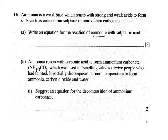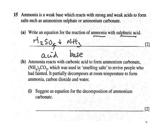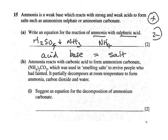In the reaction between ammonia and sulphuric acid: ammonia is a base, sulphuric acid is an acid. The salt formed is ammonium sulphate — no water is produced. The ammonium ion is a single positive ion and the sulphate is a 2− ion, so we need 2 ammonium ions, giving (NH₄)₂SO₄. The equation is balanced by placing a 2 in front of NH₃.